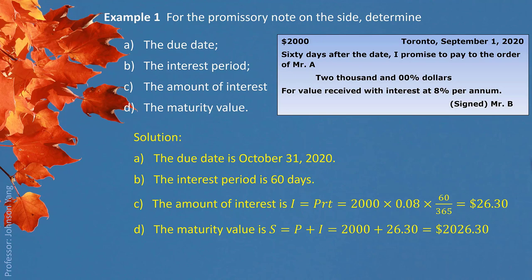Here we focus on the mathematics and basic logic of handling a promissory note. In the real world, there is a three-day grace period — by law, the debtor can have a three-day extension to pay back the money. We tend to ignore this situation and focus purely on the information from the note directly.